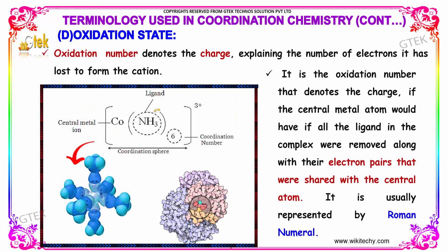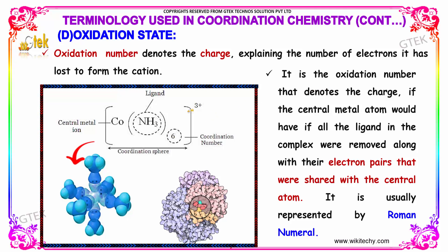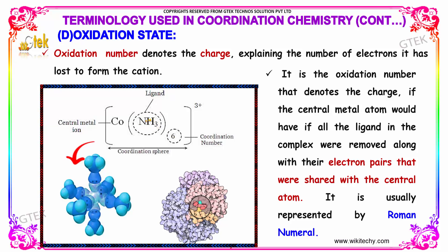Oxidation state. It denotes a charge explaining the number of electrons lost to form the cation. It is the oxidation number that denotes a charge the central metal atom would have if all the ligands in the complex were removed along with the electron pairs that were shared with the central atom. It is usually represented by a Roman numeral.